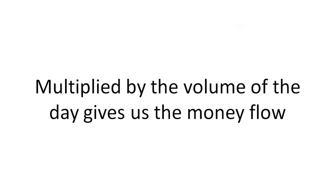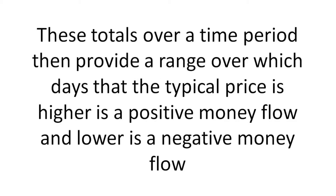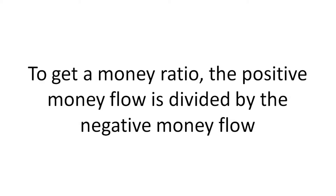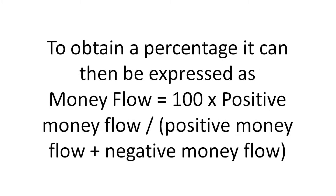Multiplied by the volume of the day gives us the money flow. These totals over a time period then provide a range over which days the typical price is higher — as a positive money flow — and lower as a negative money flow. To get a money ratio, the positive money flow is divided by the negative money flow.